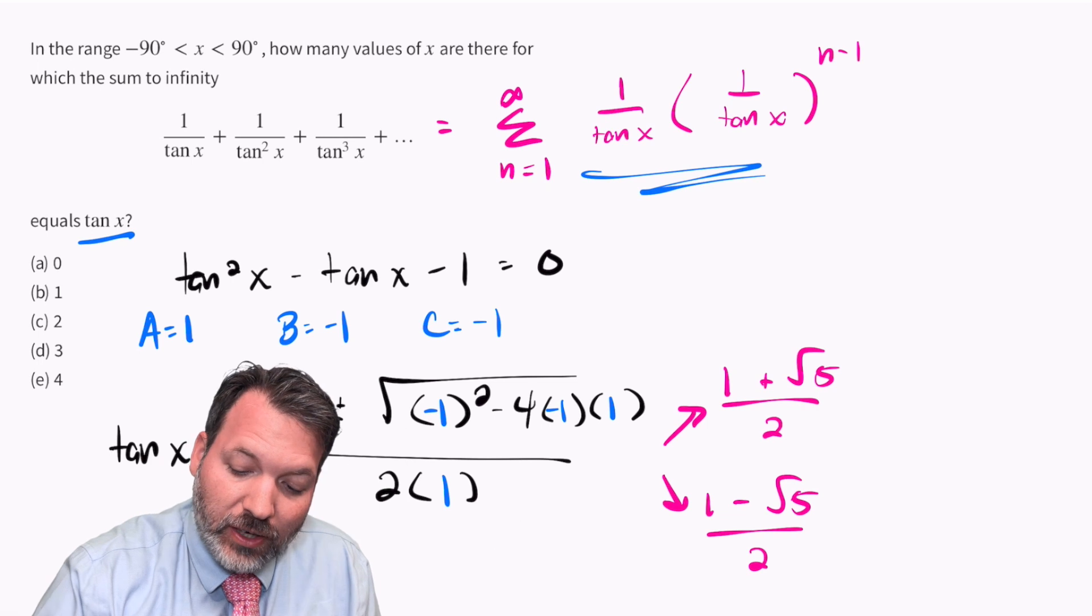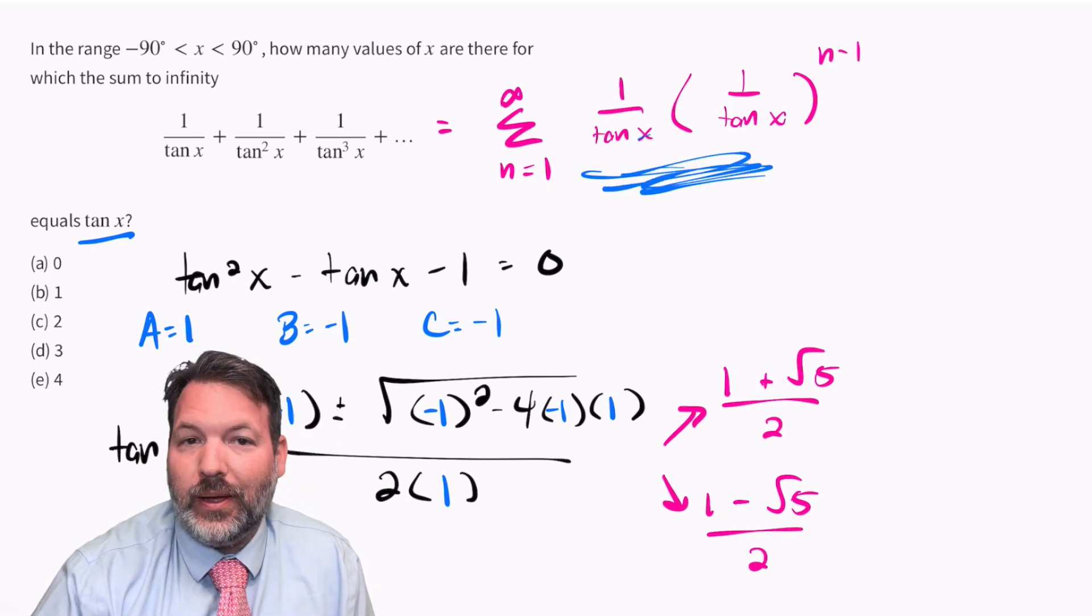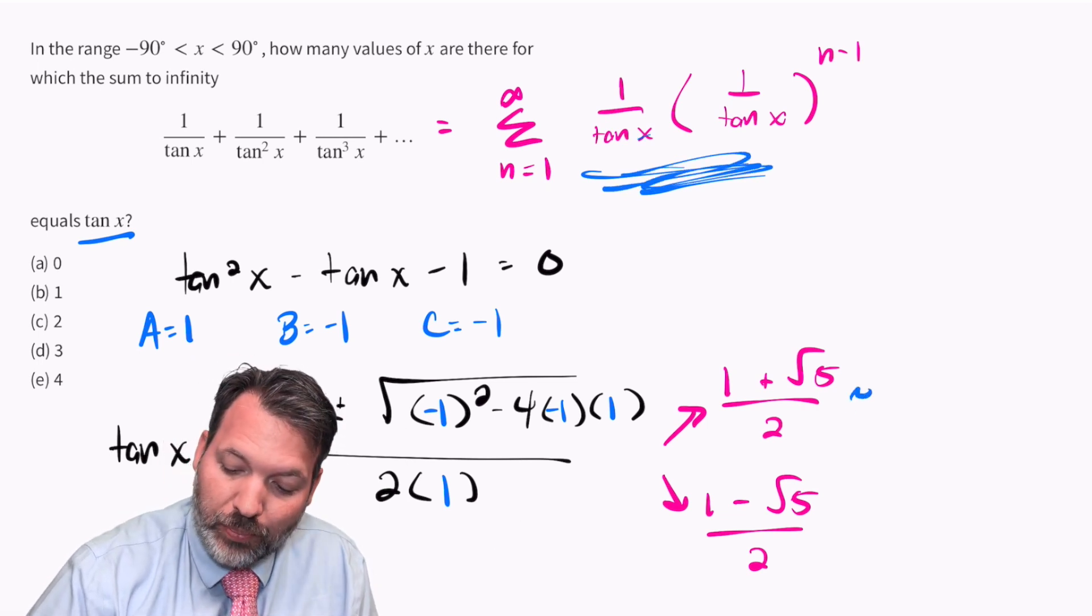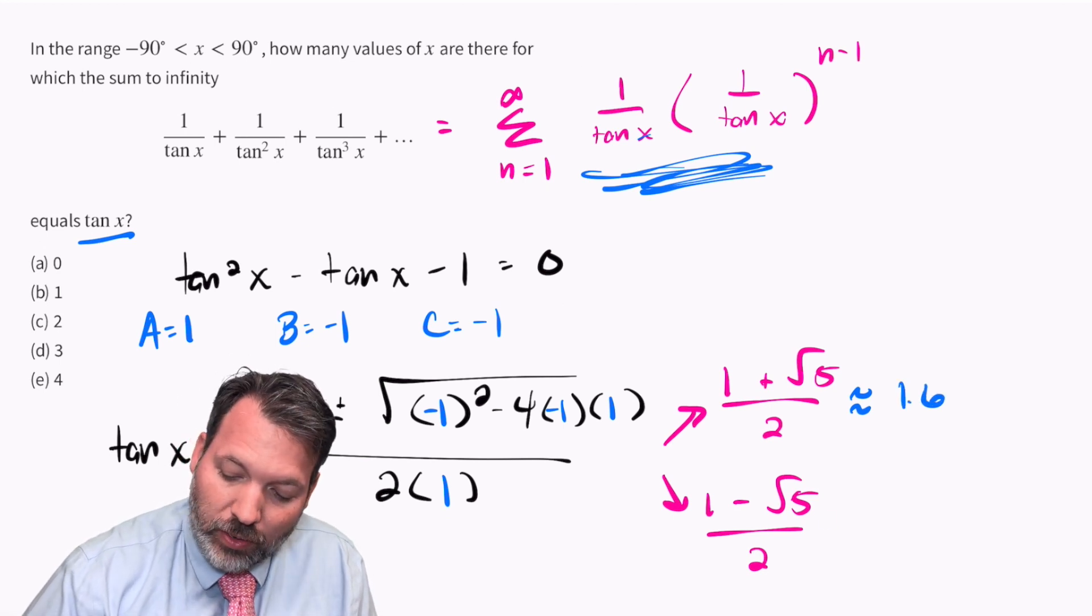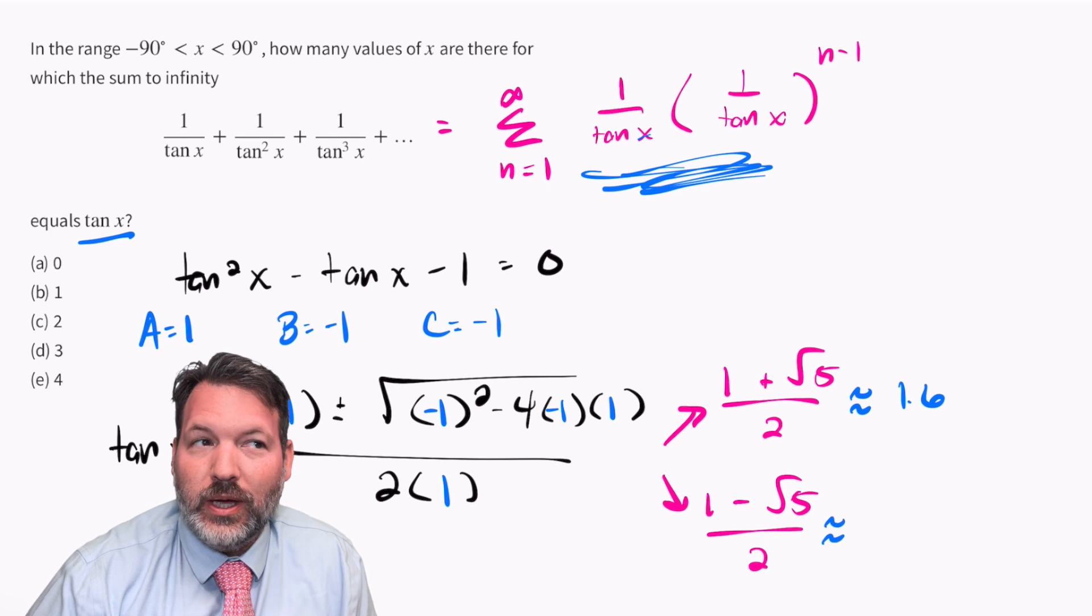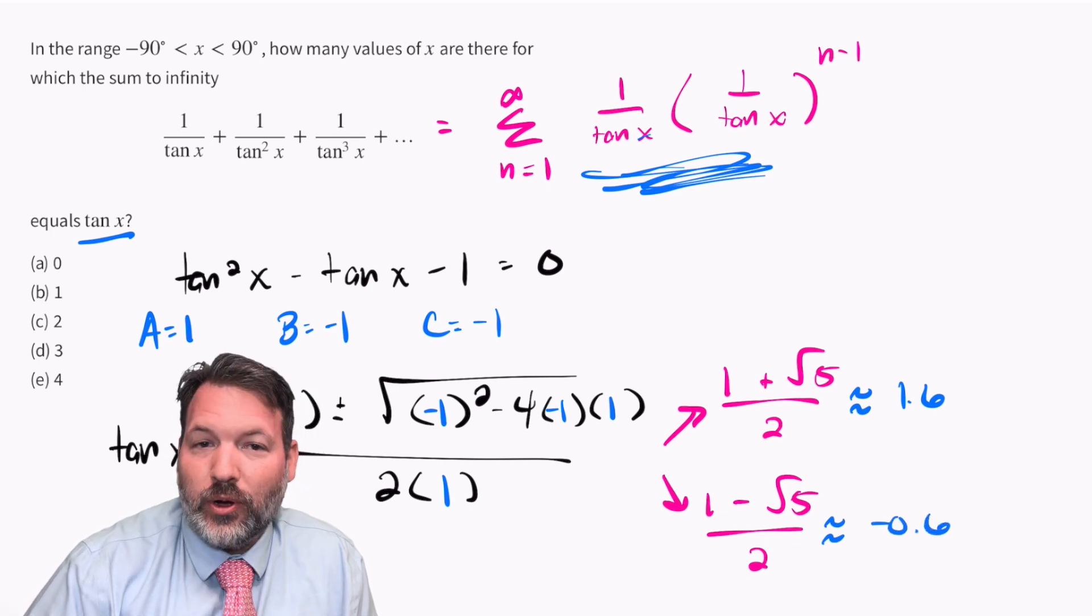And this is where the series convergence comes back into play. Because this first one, 1 plus root 5 over 2, this is about 1.6. This second one, 1 minus root 5 over 2, this is about negative 0.6.